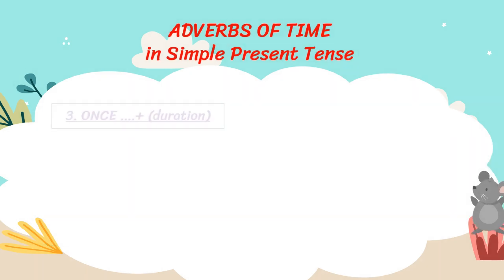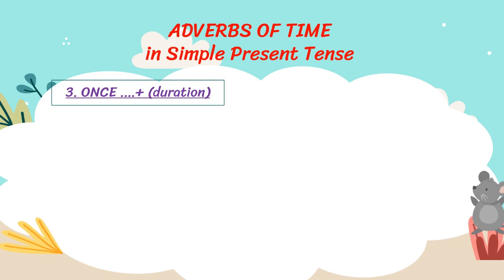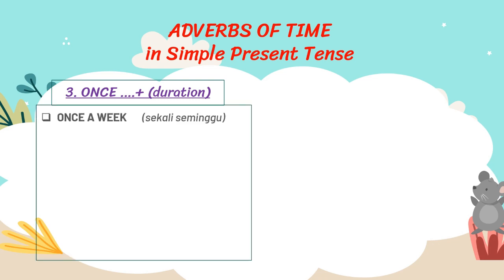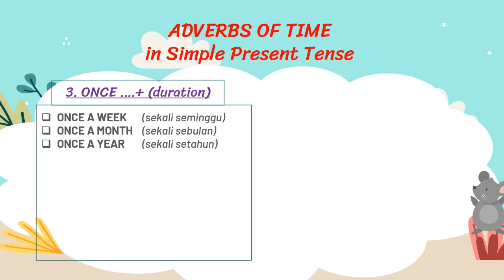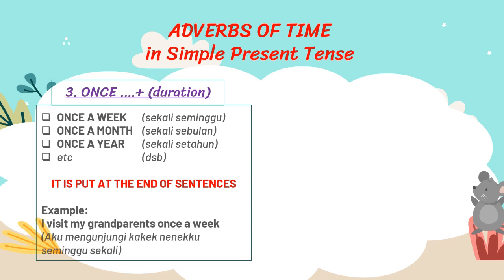The third adverb of time is the use of 'once', followed by duration. Dalam bahasa Indonesia berarti satu kali. For example: once a week, once a month, once a year, etc. It is put at the end of sentences.